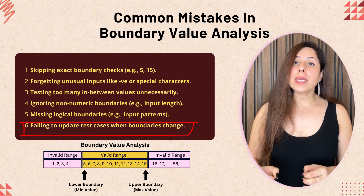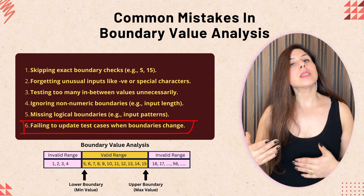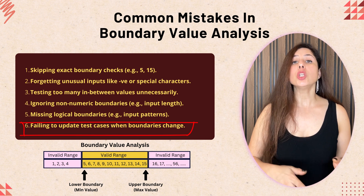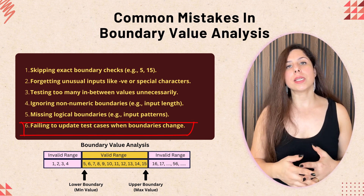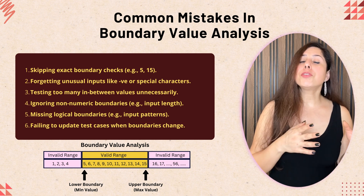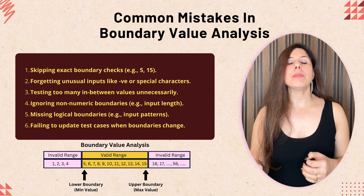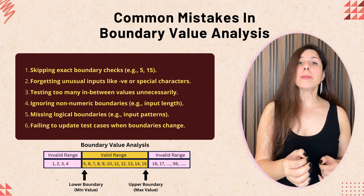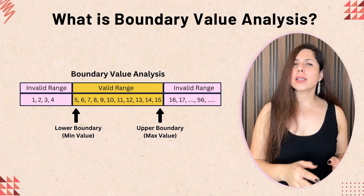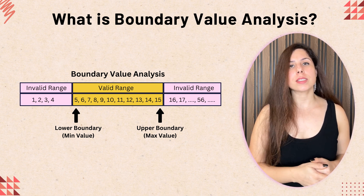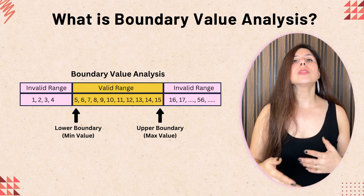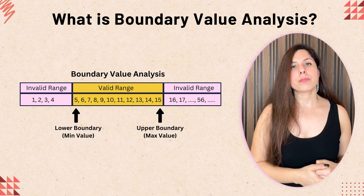Fifth, not reassessing when requirements change — as requirements evolve, boundaries may shift. For example, changing the range from 5–15 to 10–20 means test cases must be updated accordingly, as outdated boundaries could introduce new bugs. If used properly, boundary value analysis can be a powerful tool for efficiently catching edge-case bugs. I hope you now have a solid understanding of boundary value analysis in software testing. Try applying this technique the next time you're testing boundary-related scenarios, and you'll see just how valuable it can be. Thanks for watching!